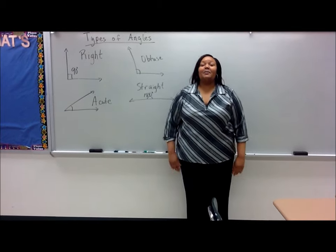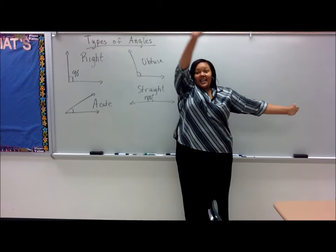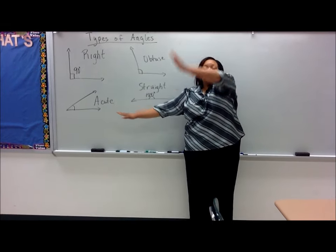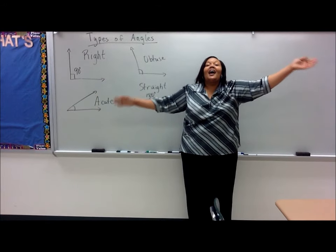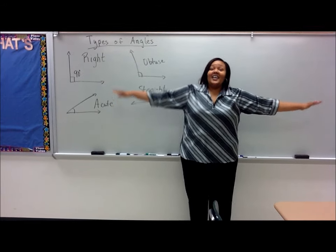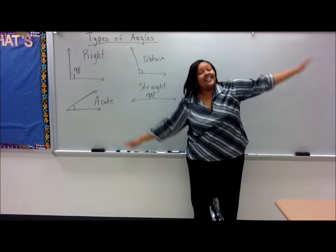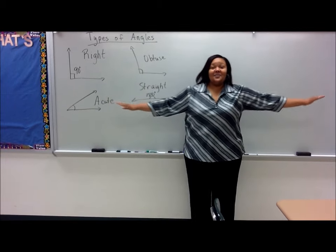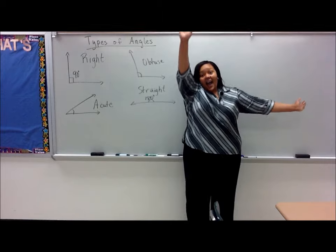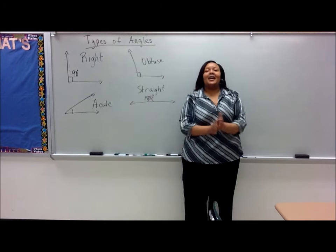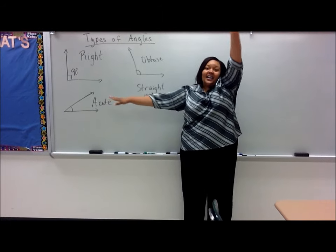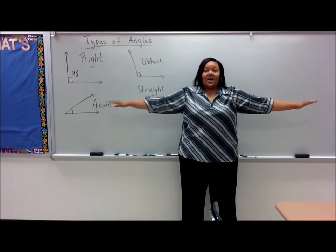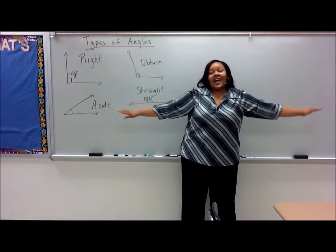The name of the angle is a right, acute, obtuse. The name of the angle is a right, acute, obtuse. A straight angle is 180 degrees. Now everybody sing it with me — right, acute, obtuse. The name of the angle is a right, acute, obtuse. A straight angle is 180 degrees.